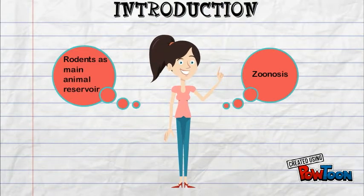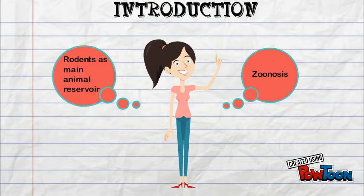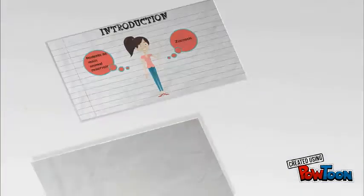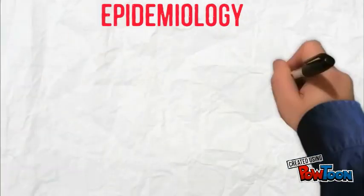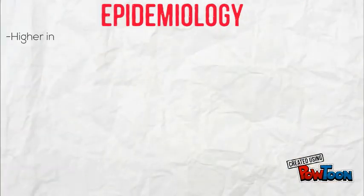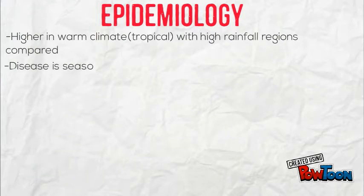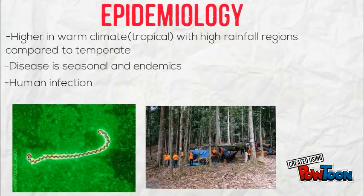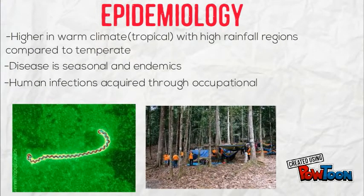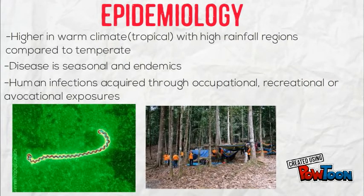The main animal reservoir is rodents, specifically rats, as well as dogs, rabbits, birds, and more. Leptospirosis is presumed to be the most widespread zoonosis in the world, with incidence higher in warm climate countries with high rainfall than in temperate regions. The disease is seasonal, occurring most in summer or fall. In Malaysia, most cases are linked to visiting waterfalls.